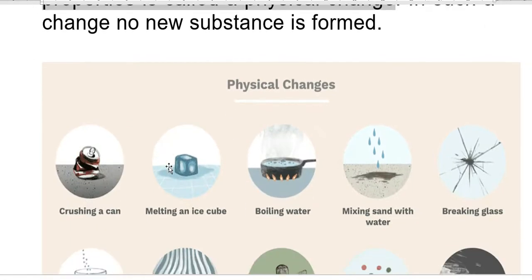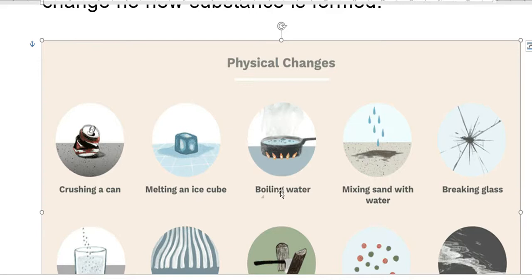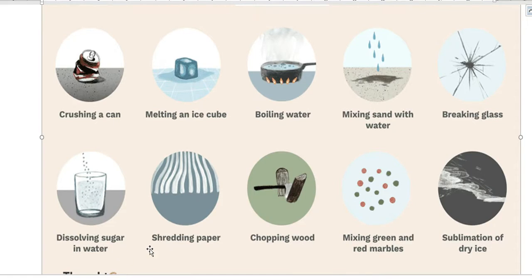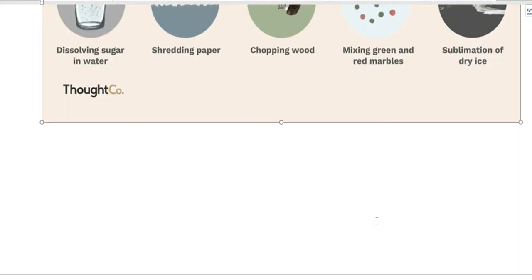Examples of physical changes include crushing a can, melting ice, boiling water, mixing sand with water, breaking glass, dissolving sugar in water, shredding paper, chopping wood, and mixing green and red marbles. These are all physical changes.